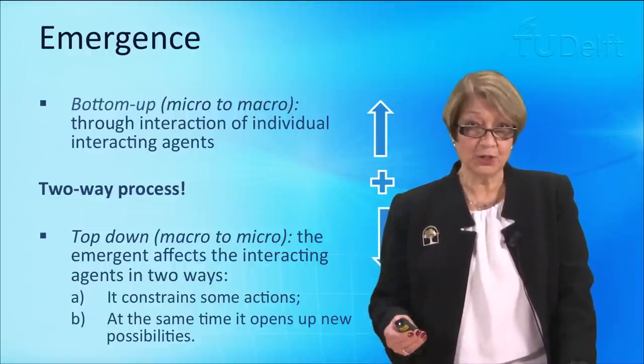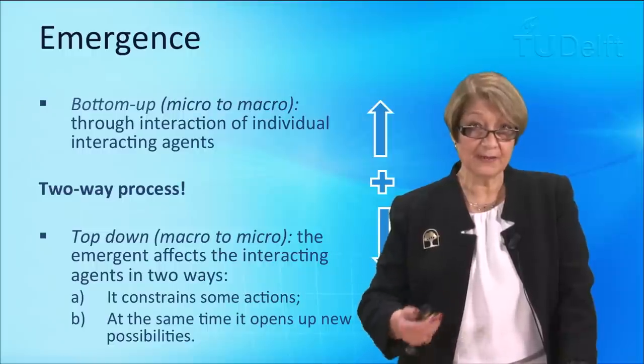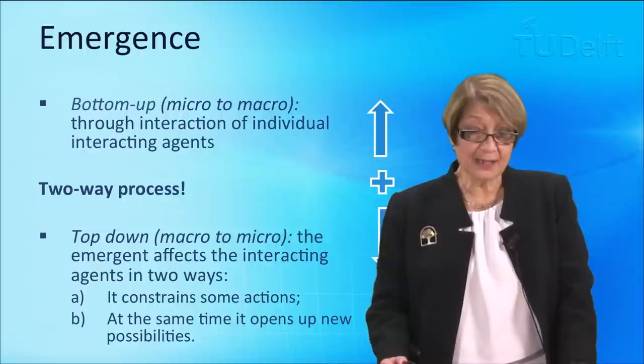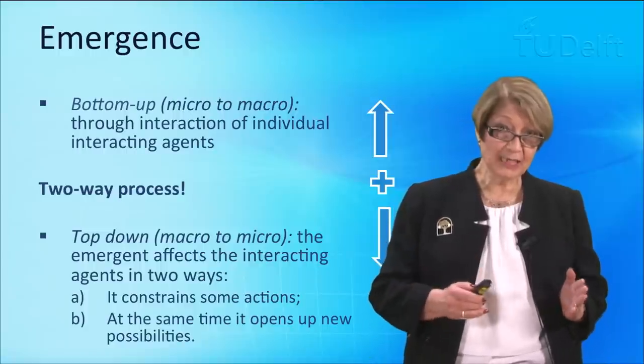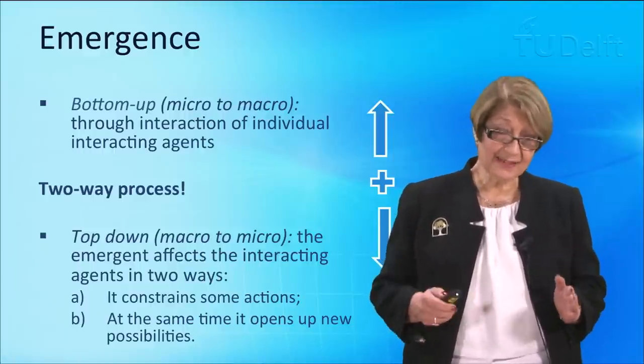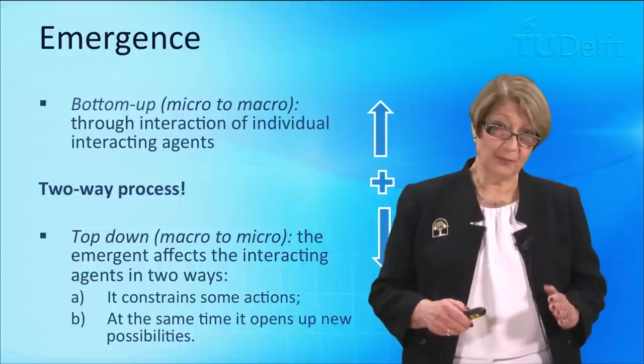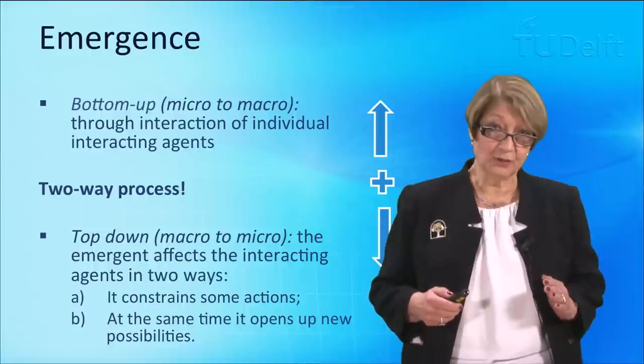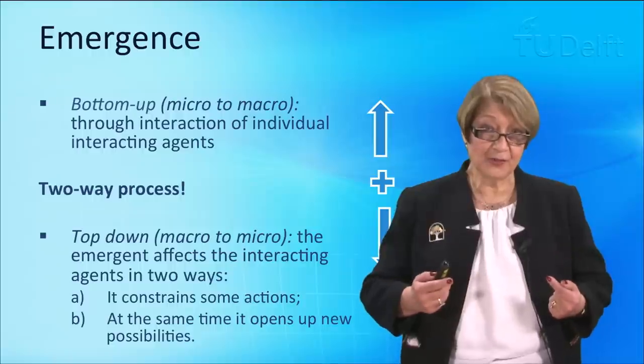Culture is an emergent process. It arises through the interaction of everyone in a particular organisation or society. I am a member of the London School of Economics. There are certain things I would not dream of doing. In other words, my behaviour is constrained through the emergent process which is the culture. However, at the same time, there are doors open to me because I am a member of the London School of Economics that would not be open to me as an individual.